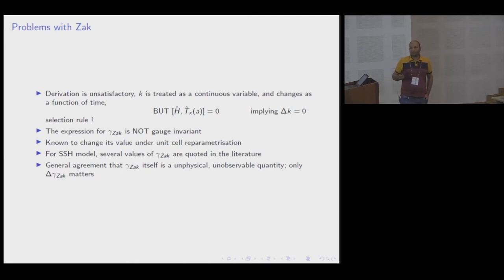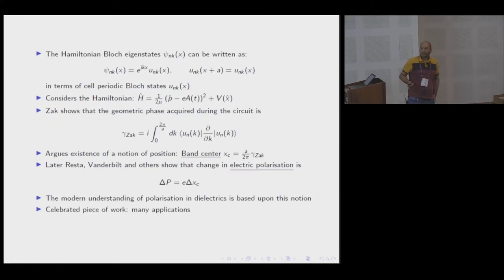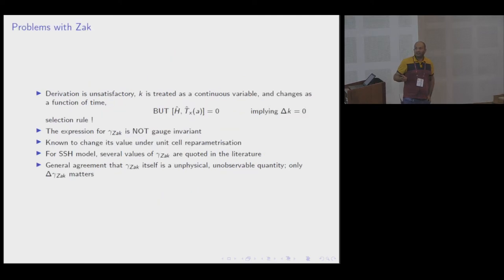There are problems with Zak, at least in the way Zak's derivation goes about. The first and foremost problem: a unit cell displacement operator commutes with the Hamiltonian, which means k, wave vector k, is a good quantum number and there is a selection rule delta k equal to zero. That means even if you apply an electric field, you cannot really change the value of k.